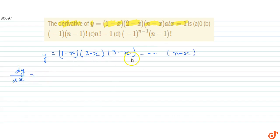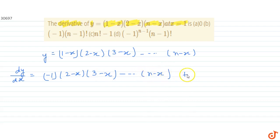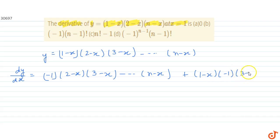We will use the product rule. First, differentiate the first function (1 minus x) — we get minus 1 — and keep all the other functions the same, giving (2 minus x)(3 minus x)...(n minus x). Then differentiate (2 minus x), giving minus 1, and keep all other terms as they are: (1 minus x) into (3 minus x) till (n minus x).